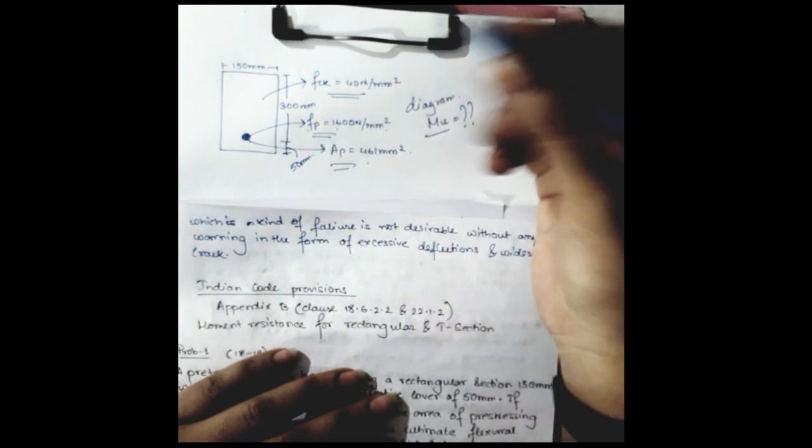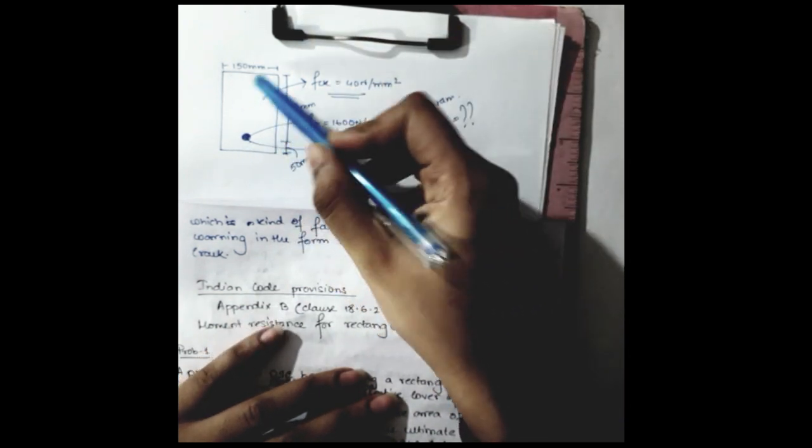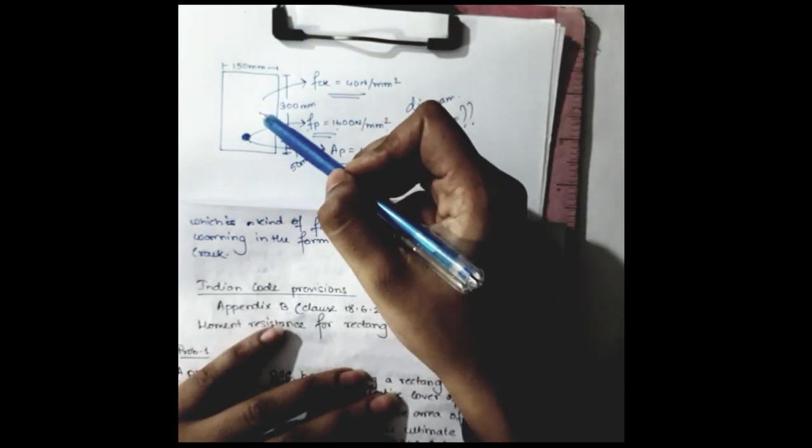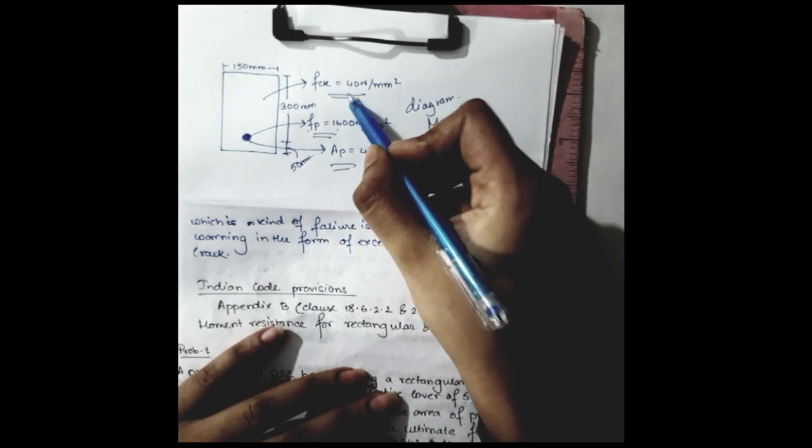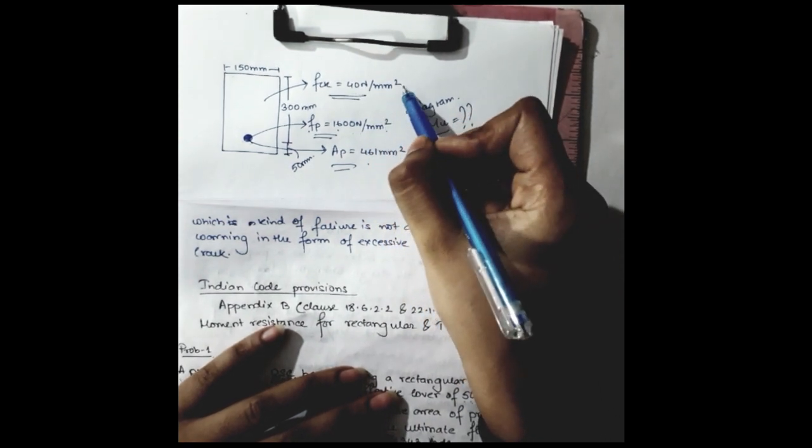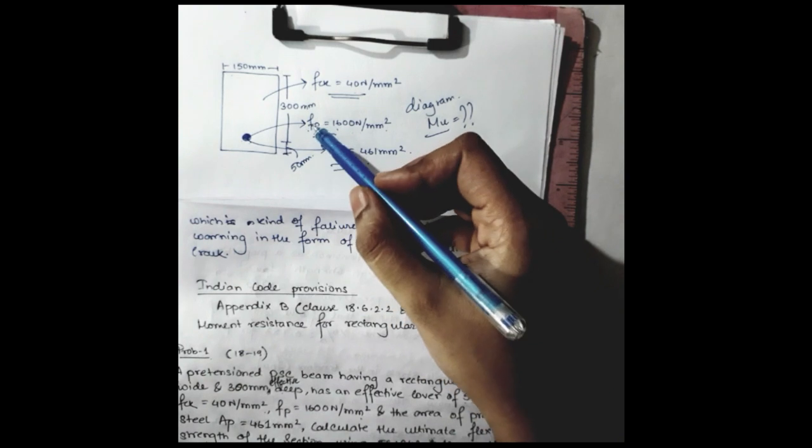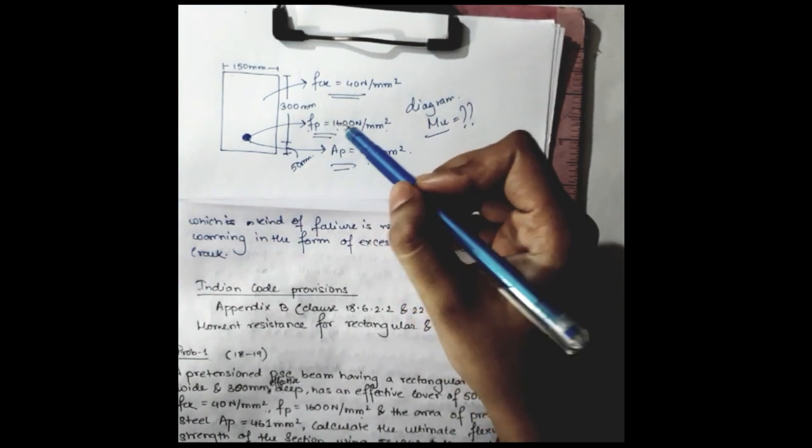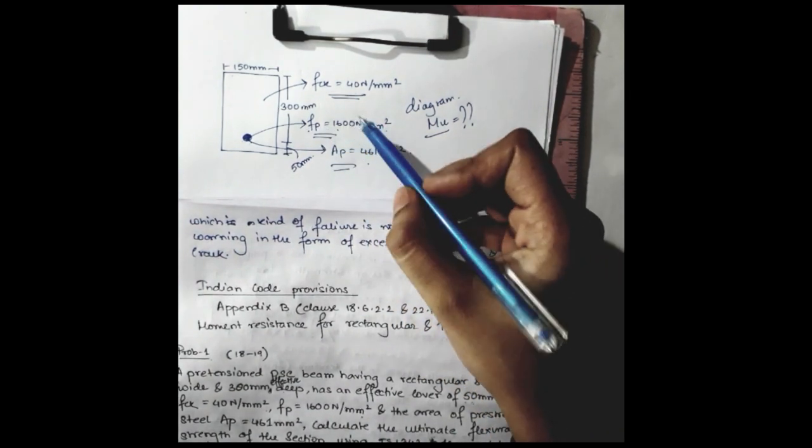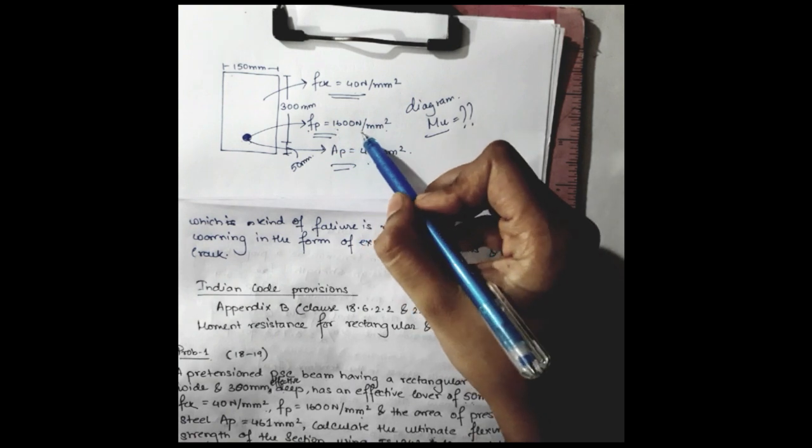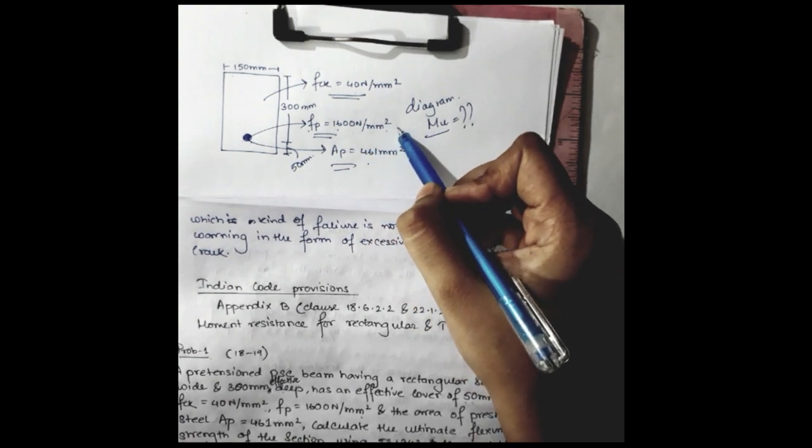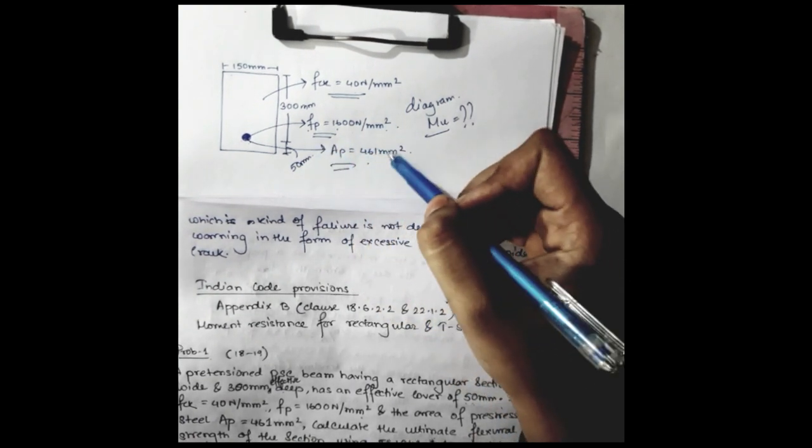So the characteristic compressive strength of the concrete has been provided as 40 Newton per millimeter square. The characteristic tensile strength of pre-stressing steel is given as 1600 Newton per millimeter square, where the area of pre-stressing steel is given as 461 millimeter square.